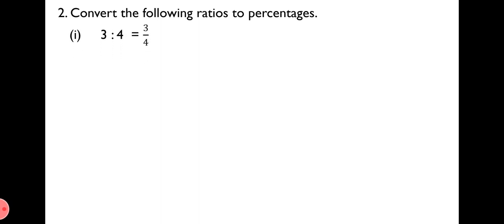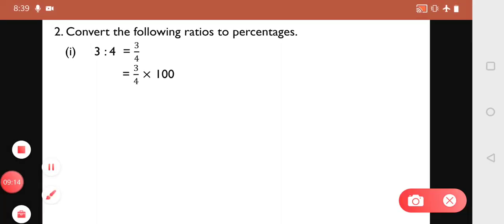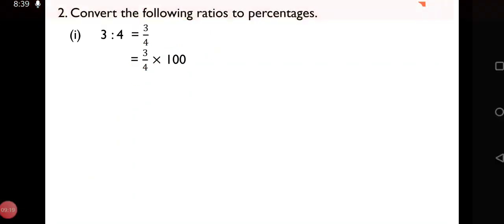Question 2: Convert the following ratios to percentages. Number 1: 3:4. We write 3:4 as the fraction 3/4. To convert to percentage, multiply by 100: 3/4 × 100. Reducing: 4 goes into 100 twenty-five times, so 3 × 25 = 75%. Therefore 3:4 = 75%.